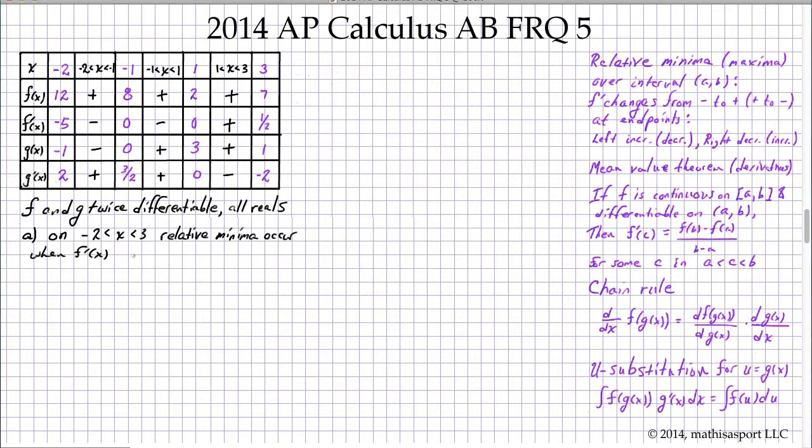We know that relative min occur when f prime of x changes from negative to positive as we go left to right. This occurs where we go negative to positive as we go left to right on f prime at 0.